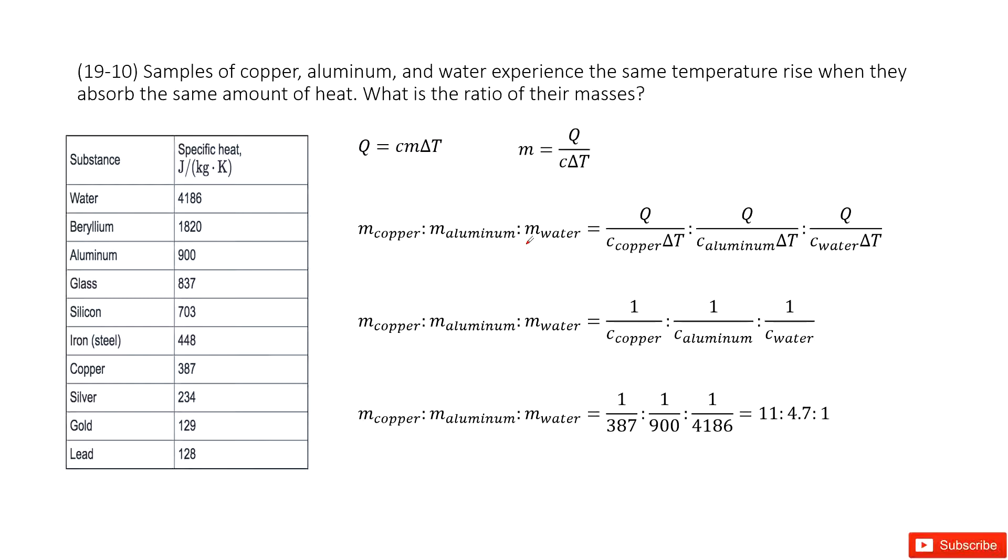So we can write down the first law of thermodynamics, Q = cmΔT. And then converted, we get the function for mass, m = Q/(cΔT). So Q is the heat, c is specific heat, and ΔT is the temperature change.